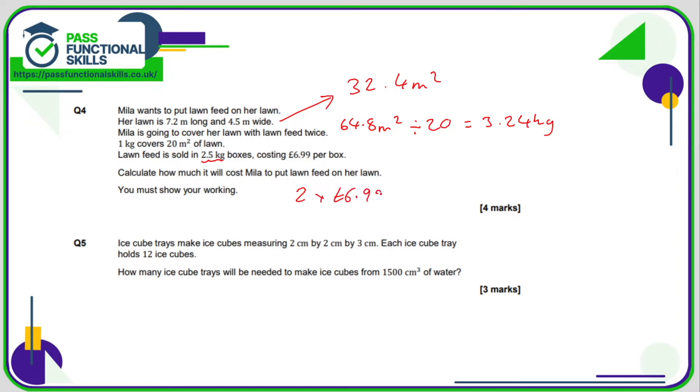For question number five, the first thing we're going to do is work out the volume of water in one ice cube. So it's 2 times 2 times 3—that's 12 cubic centimeters.